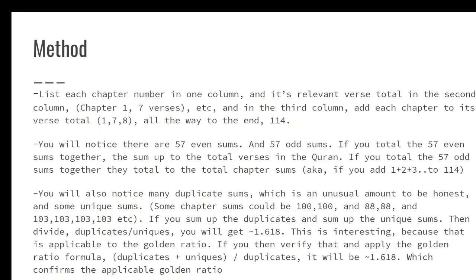So, the method to arrive at this checksum, or how this math pattern is even created, or found, or derived - we create three columns. In the first column, you have the chapter numbers, 1 through 114. In the second column, you have the verse totals for each chapter. So, chapter 1, next to it would be the total verses, 7 verses. And the third column would be the sum, so 1 plus 7. And you continue doing that for all 114 chapters.